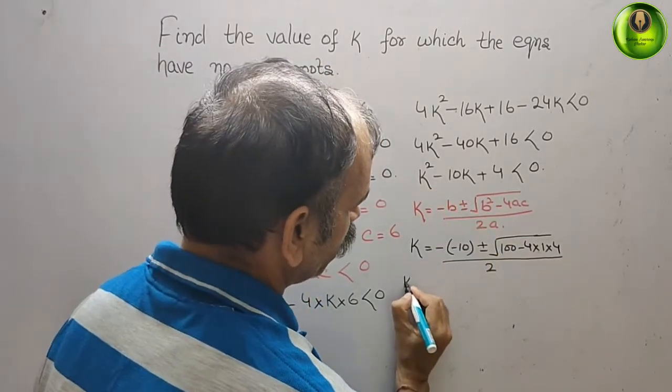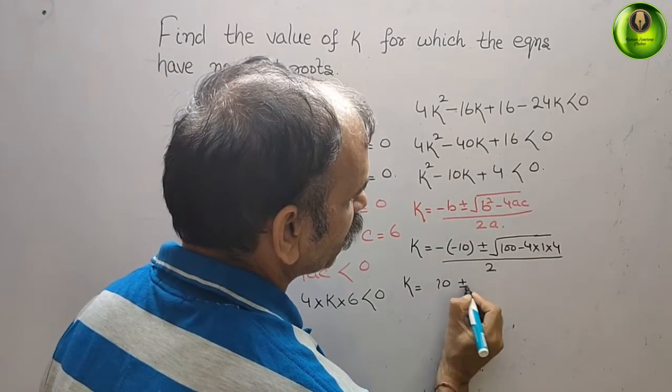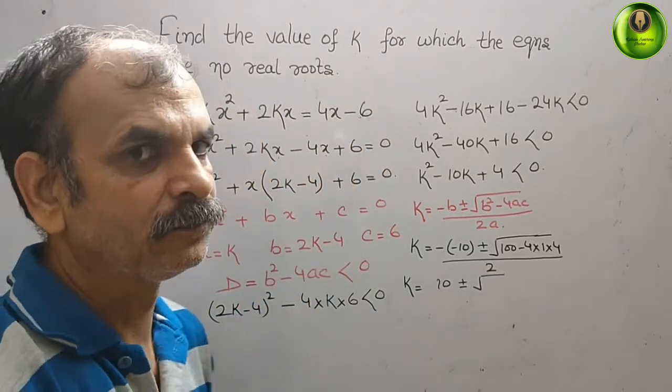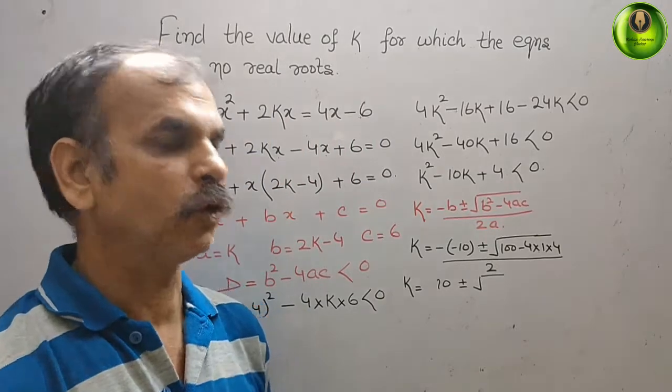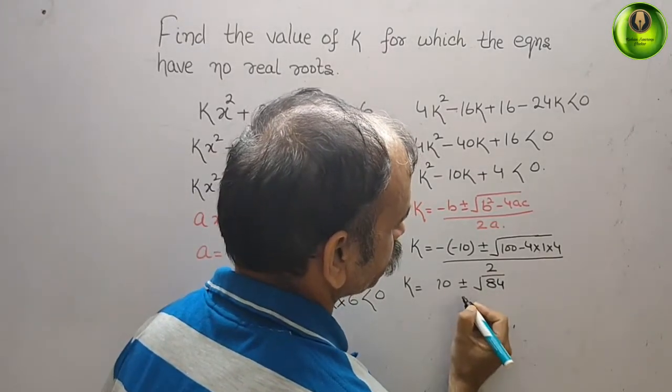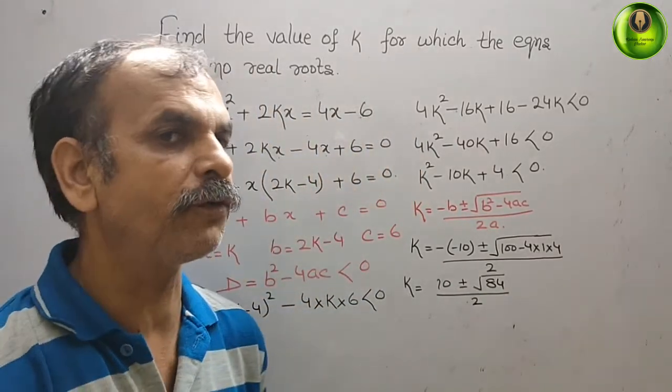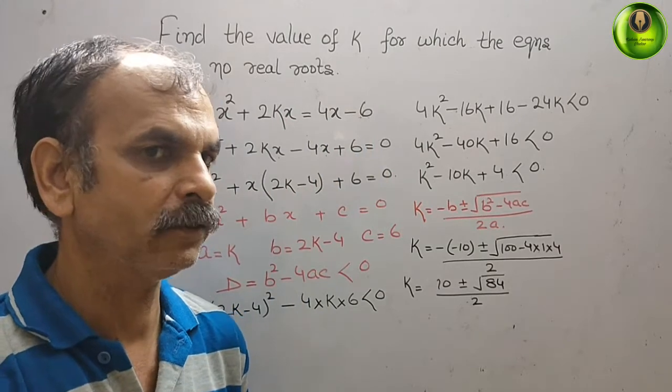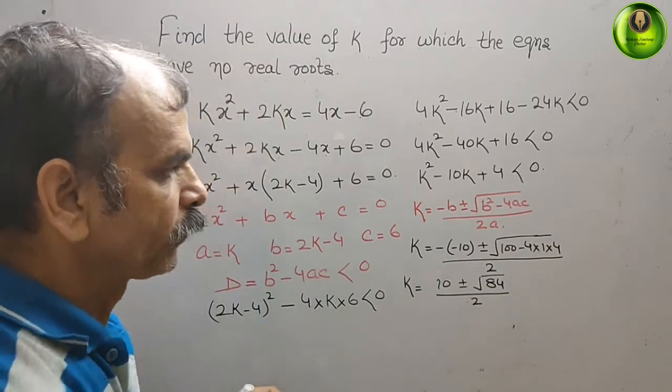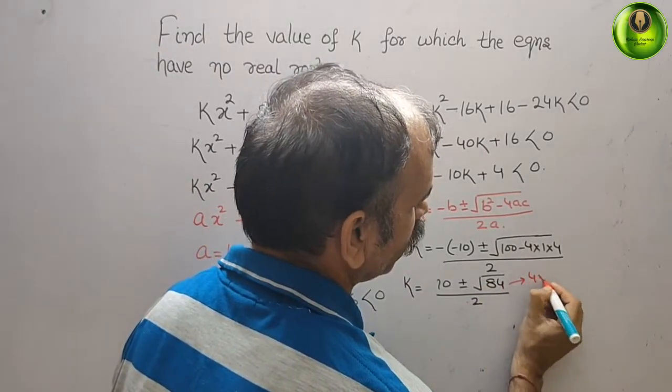So here you will get k = 10 ± √(100 - 16) / 2, which is 10 ± √84 / 2. Now we will find out the factors of 84. The factors of 84 is 4 times 21.